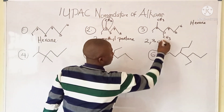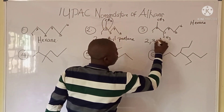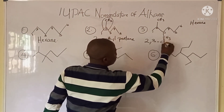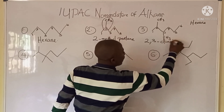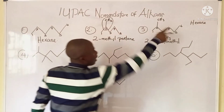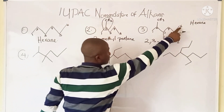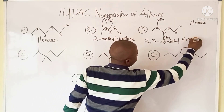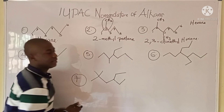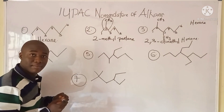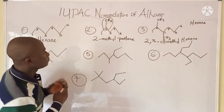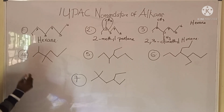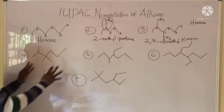We have two methyl groups, so the prefix is 'di.' The name becomes 2,3-dimethylhexane, since the parent chain is six carbons.